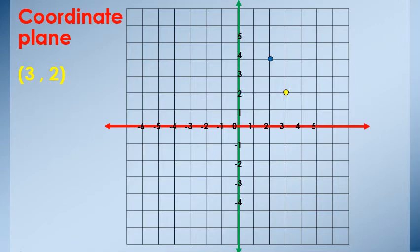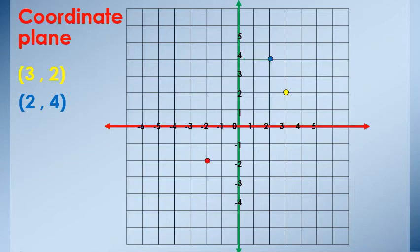Another point: join it with axis X — is 2 — and join it with axis Y — is 4. Then the coordinate of this point is (2, 4). Another point: join it with axis X at negative 2, and with axis Y at negative 2. Then the coordinate of this point is (negative 2, negative 2).